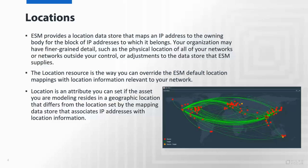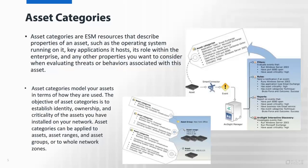Asset categories are a way to have an extensible schema where you can associate attributes to your assets — asset groups, asset ranges, zones, for example. You can associate an attribute such as whether the asset has a low, critical, or high priority within the environment, or whether it is part of your PCI compliance, your Sarbanes-Oxley, or all of the above. Assets can have multiple attributes associated to them, and how the business wants to group information can be leveraged through asset categories.